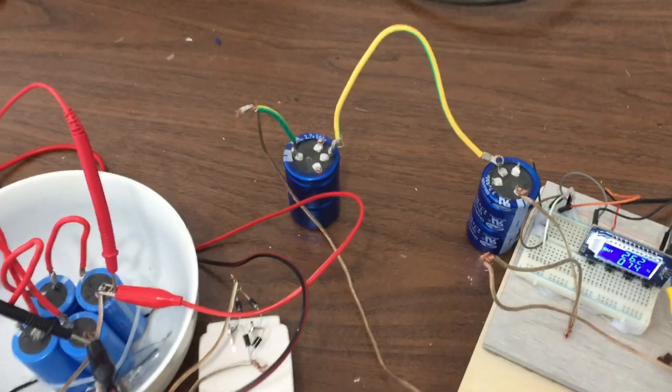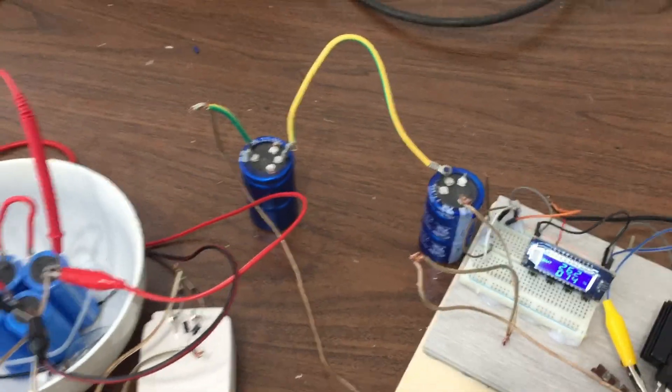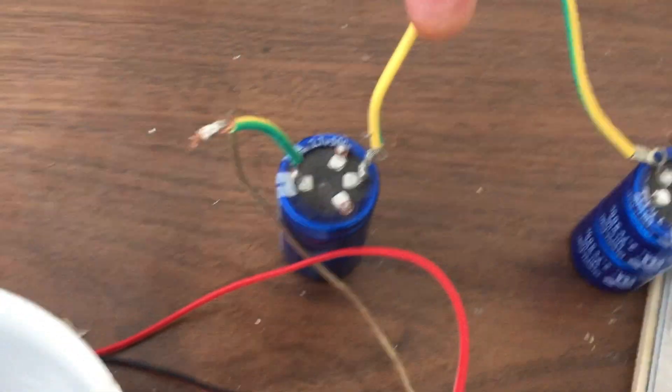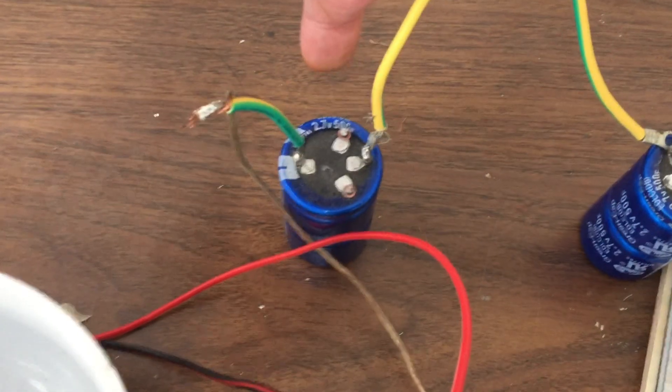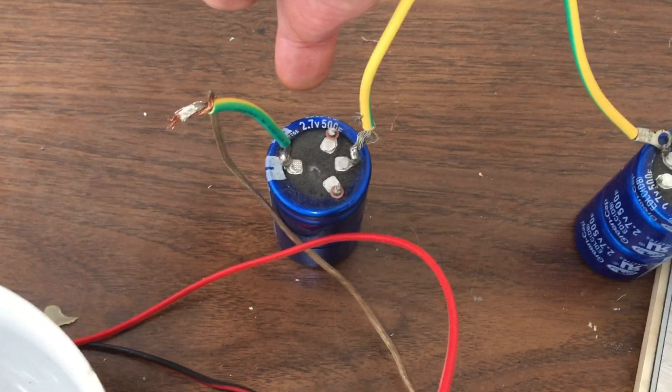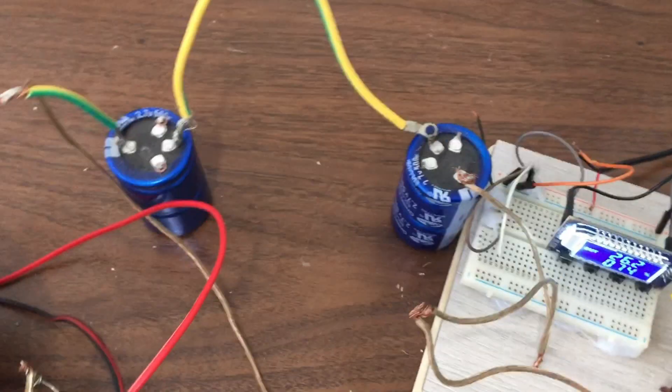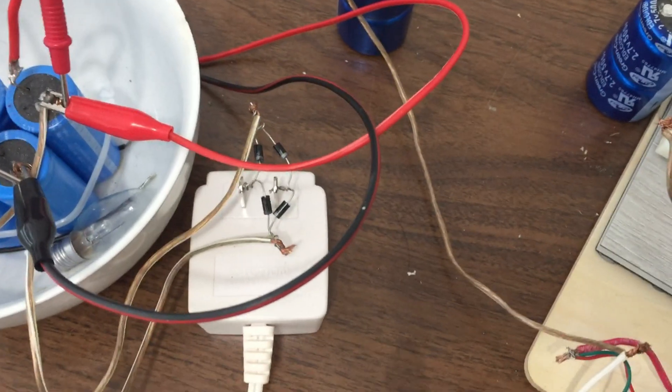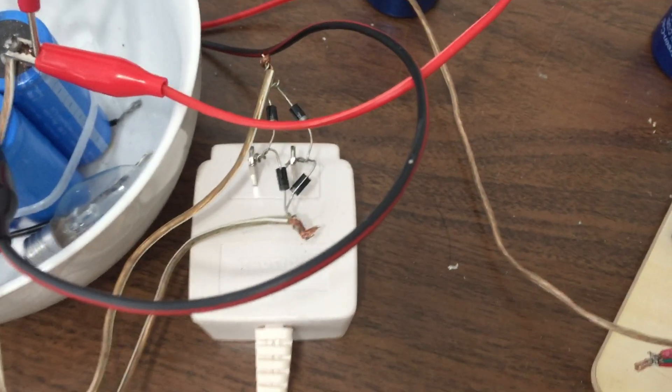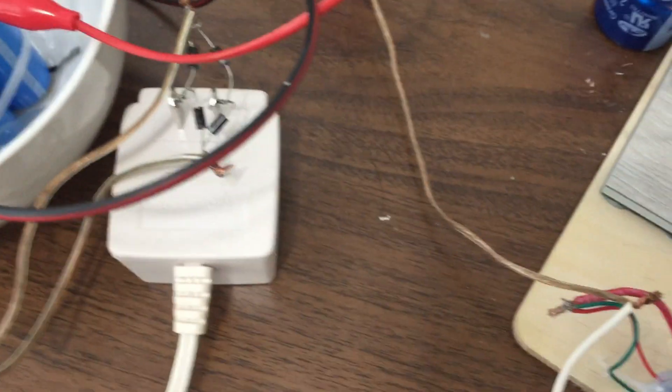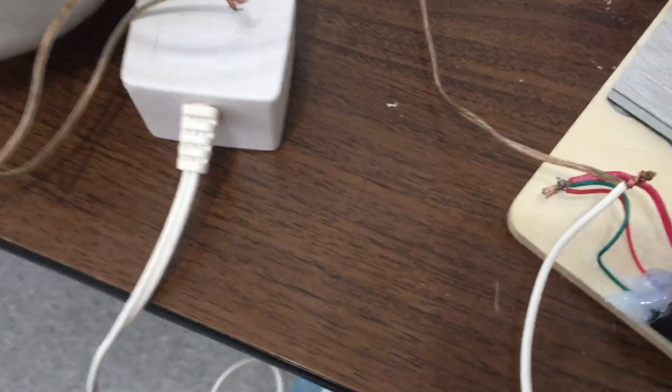To start here, this is capacitor A over here. It's 500F and it can handle 2.7 volts. Same capacitor here. So I charged this one at 1.96 beginning. This one was discharged. What I decided to do is I just found a random power supply transformer I had around the house. This is an AC, 110 to 2 volt AC.